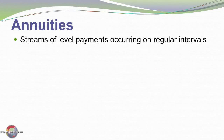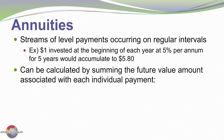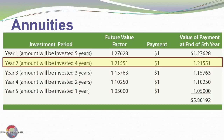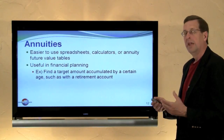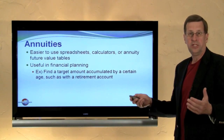Annuities are streams of level payments occurring at regular intervals. For example, if $1 is invested at the beginning of each year at 5% interest for five years, it will grow to $5.80. This can be calculated by summing future value amounts for individual payments: the first payment is invested for five years and grows by a factor of 1.05 to the 5th power, equaling $1.27; the second payment grows for four years to $1.21; and so on. These future value amounts are useful in financial planning, such as retirement planning to accumulate a target amount by a certain age.